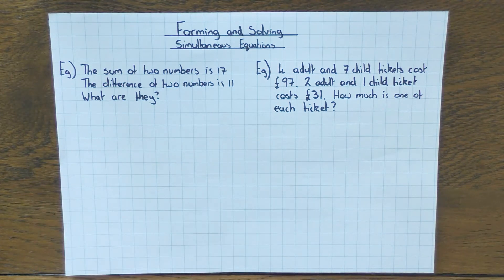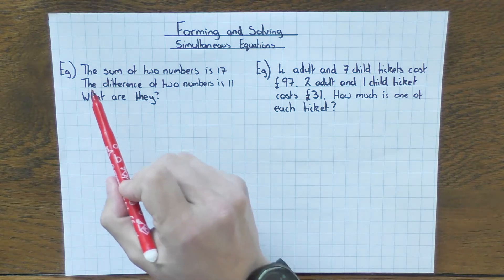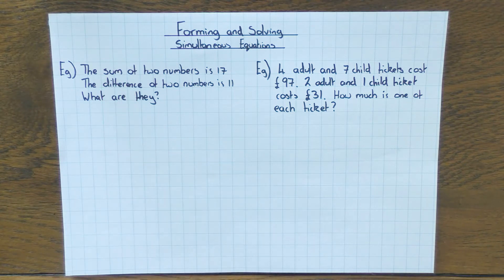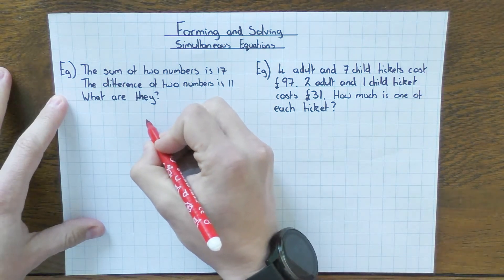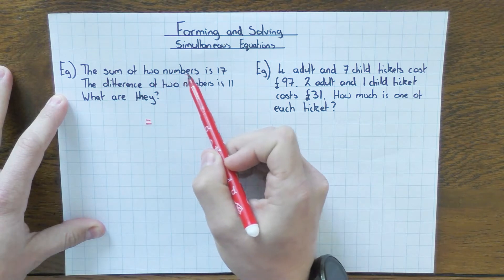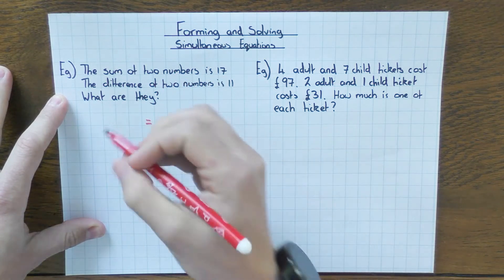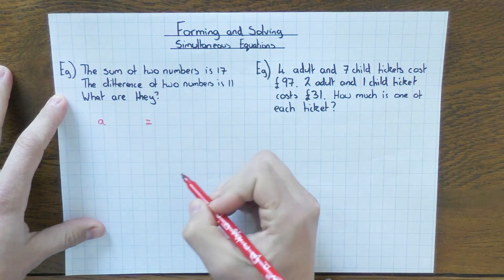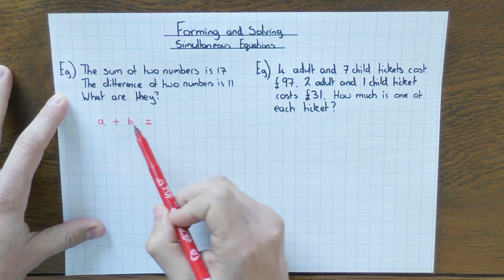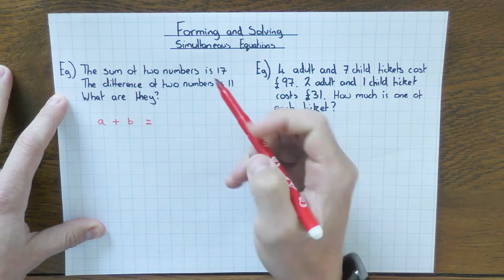So the first one says: the sum of two numbers is 17, the difference of two numbers is 11 — what are they? The first thing to realise here is the keywords: sum means add, and difference means take away. So I'm going to form an equation. To have an equation you need an equal sign. I'm going to use the top line — the sum of two numbers. I'll call the first one A and the second one B, so A plus B equals 17.